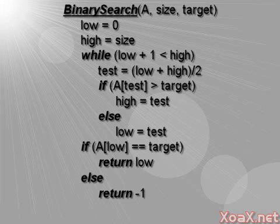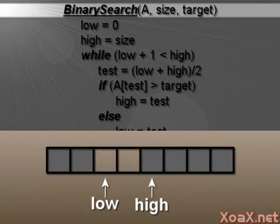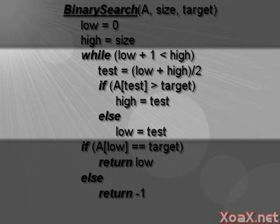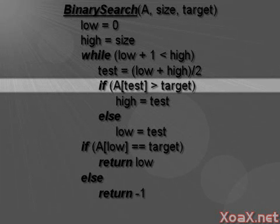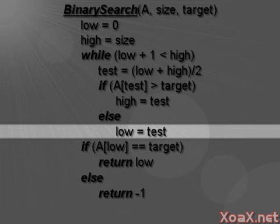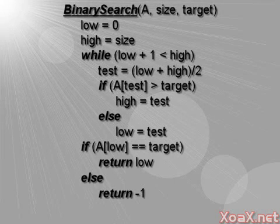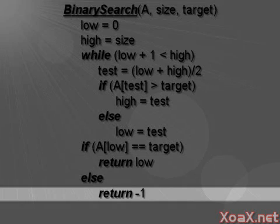Here is the pseudocode for the binary search function. Like the linear search, the function takes an array, its size, and the target as parameters. For the algorithm, we keep a low and high index which bound the set of viable entries, with low being the least viable index and high being the index of the first entry that is not viable. Initially, we set low and high to zero and the size of the array respectively. Then we run a while loop until the viable set has only one element. The while loop repeatedly takes the average of low and high as a test value. If the test value is higher than the target, we set high to the test value; otherwise, we set low to the test value. This keeps the viable set bracketed. Once the while loop exits, we have only one viable entry at low, so we test it for equality and return low if it is the target. Otherwise, we return negative 1 to indicate that the target isn't in the array.